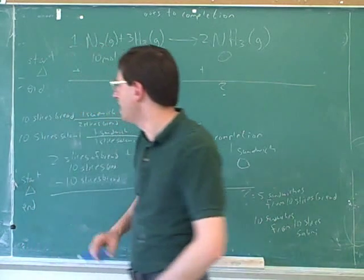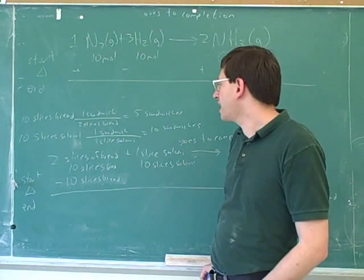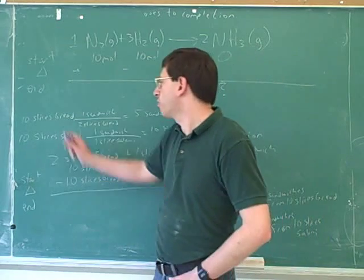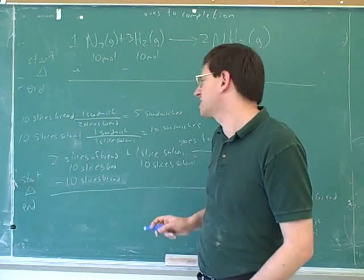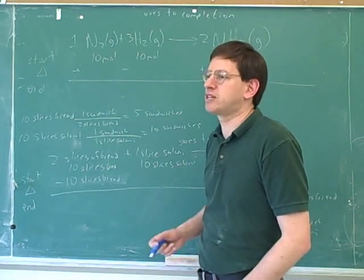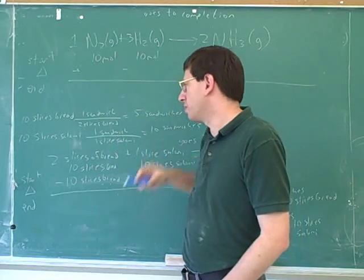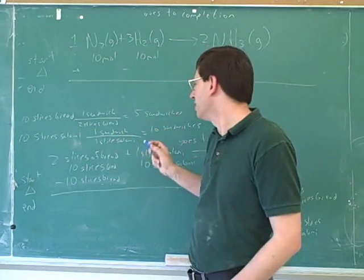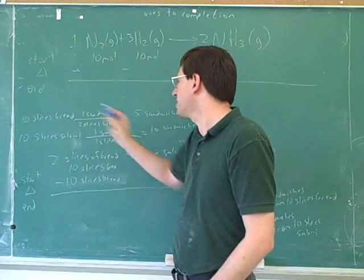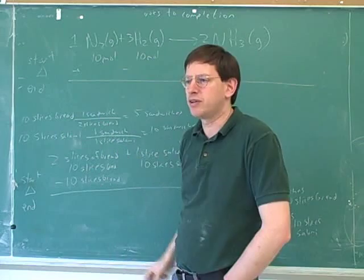But what is the formal and official way to find the limiting reagent? Well, that's what we did over here. Ask yourself: what's the maximum amount of product I could make out of one starting material, and what's the maximum amount of product I could make out of the other starting material? Whichever one makes less product is the one you're going to run out of first. We have enough salami to make ten sandwiches, but only enough bread to make five sandwiches. So we can see from that that the bread is the limiting reagent.